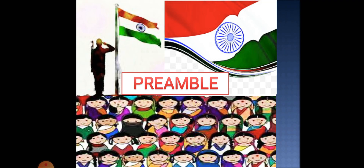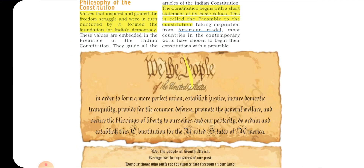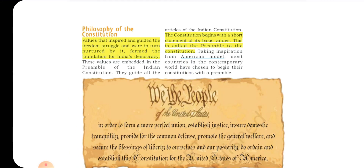To understand the philosophy of our Constitution — what our Constitution wants to say about itself — we must know about the preamble. What is a preamble? A preamble is an introductory statement in a Constitution which states the reasons and guiding values of the Constitution. The preamble enlists the values that inspired and guided the freedom struggle, and in turn were nurtured by it. The preamble guides all the articles of the Indian Constitution.